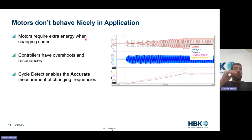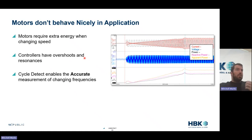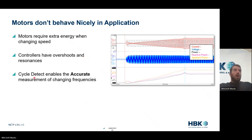In steady state, motors require less energy than when they're changing speed. Motor controllers also have overshoots and resonances — as we're changing speed, it might overshoot, undershoot, and have an oscillation, which also consumes more energy than a fixed speed. So why characterize all these fixed speeds when we can look at the actual in-situation? We should also look at optimizing energy consumption over the real vehicle duty cycle. Cycle detect enables accurate measurement during changing frequencies — we do not require a fixed speed.